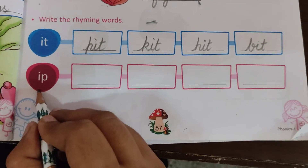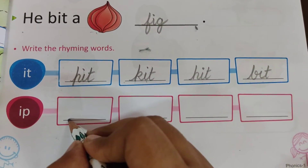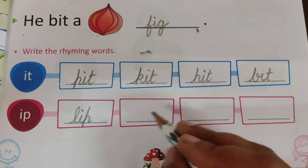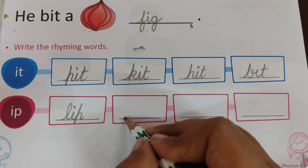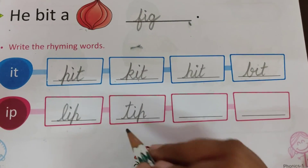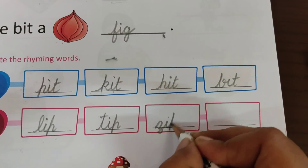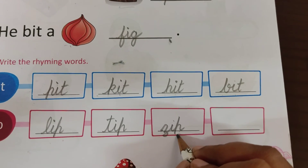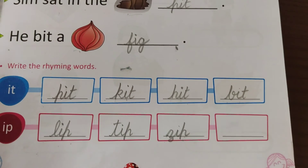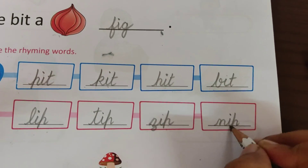Now 'ip' family words. First: L-I-P, lip. Second: T-I-P, tip. Next: Z-I-P, zip. And last: N-I-P, nip.